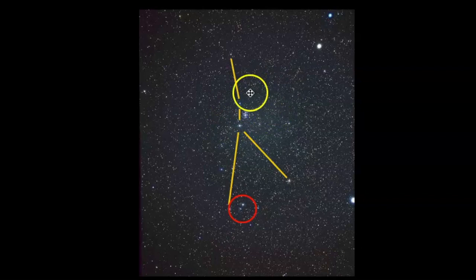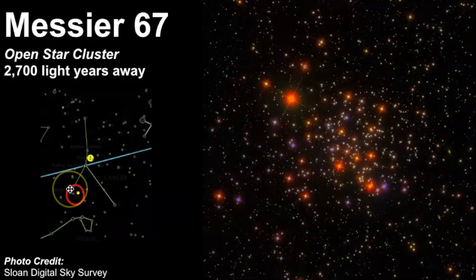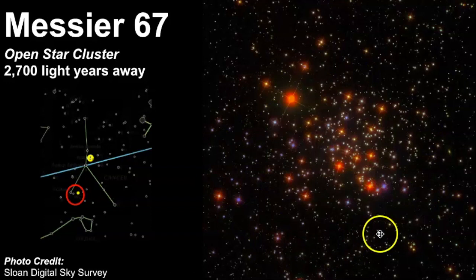I want to talk a little bit about Messier 67, which is another star cluster in Cancer. This one is a little bit further away, which explains why it's a little dimmer — it's estimated to be 2,700 light years away. I like to think of it as near the foot of the crab, though it may actually represent one of the claws. It's about the size of the full moon — about 0.5 square degrees — and it has about 200 stars, the brightest of which are of 10th magnitude, so you would need magnification to see it.